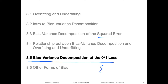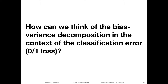So for the zero-one loss, we have a zero if the true label equals the predicted label, and one otherwise if the prediction is different from the true label. So it's a little bit trickier to analyze because it's not a continuous function. But let's attempt that nonetheless. The question is how can we think of the bias-variance decomposition in the context of the classification error, the zero-one loss.